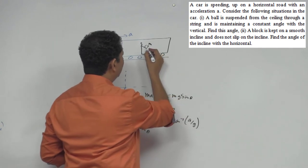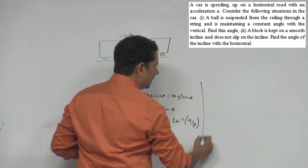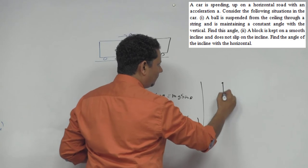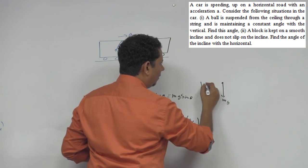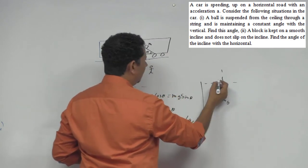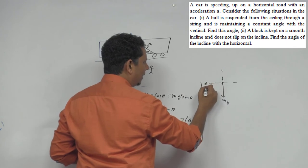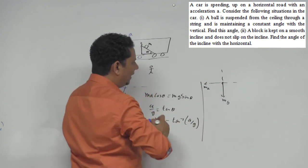If we make the FBD for this block, then this block has mass mg, and this is horizontal or vertical, and here you have a force ma along the incline.